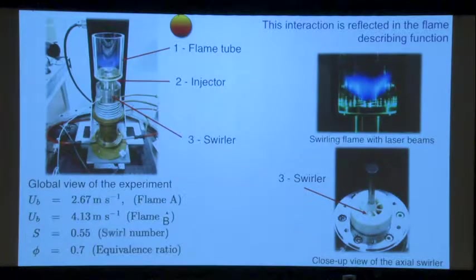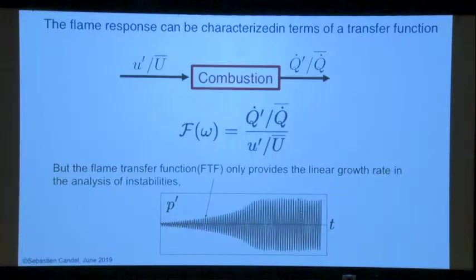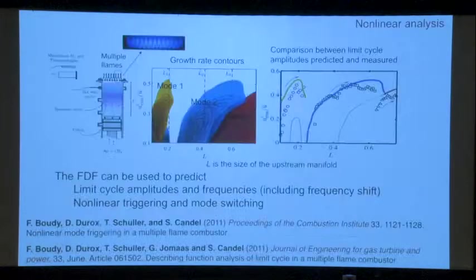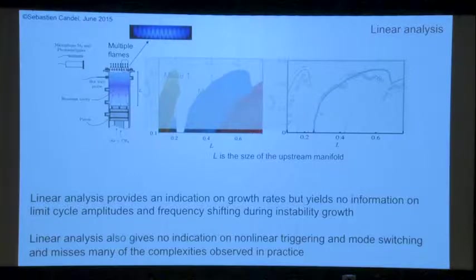So now what happens when you have the flame? This is the device — a very simple device with the flame stabilized by swirl, and there is still a rod here. The swirl number is 0.55, and this is a measured swirl number. Again, we want to characterize that using this transfer function. We showed that the describing function could explain a lot of the dynamics of the system, and we continued this effort. If you do linear analysis, you do not see everything here — linear stability gives you a very small window on the reality.